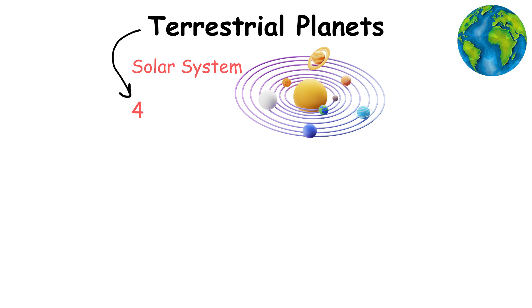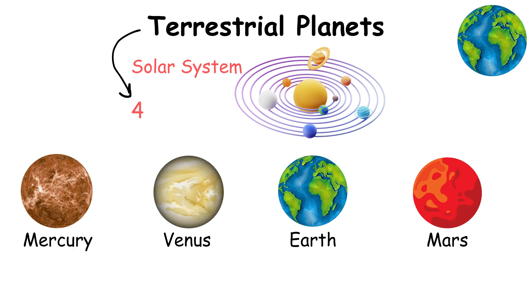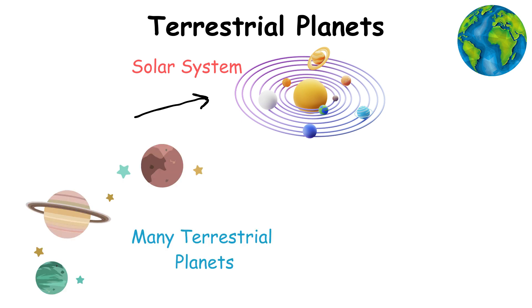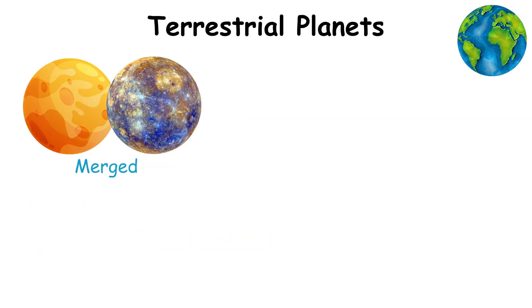The Solar System has four terrestrial planets: Mercury, Venus, Earth, and Mars. During the formation of the Solar System, there were likely more terrestrial planetoids, but they either merged with each other or were destroyed.